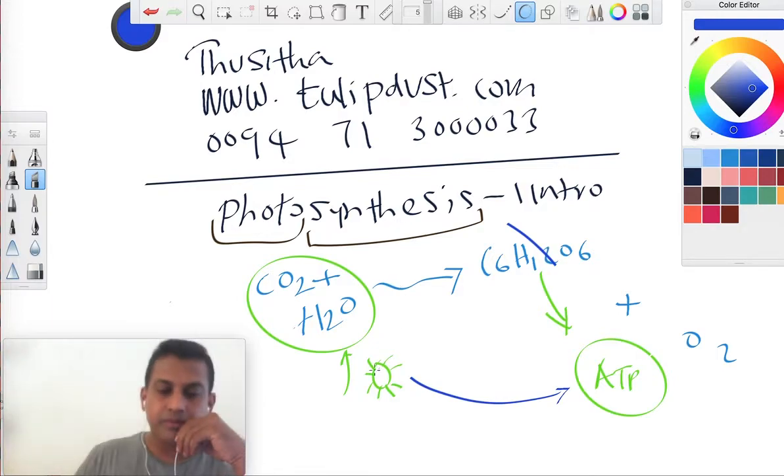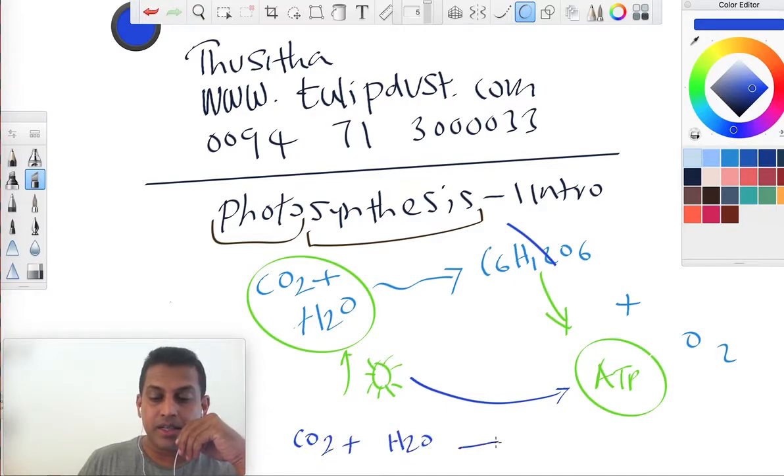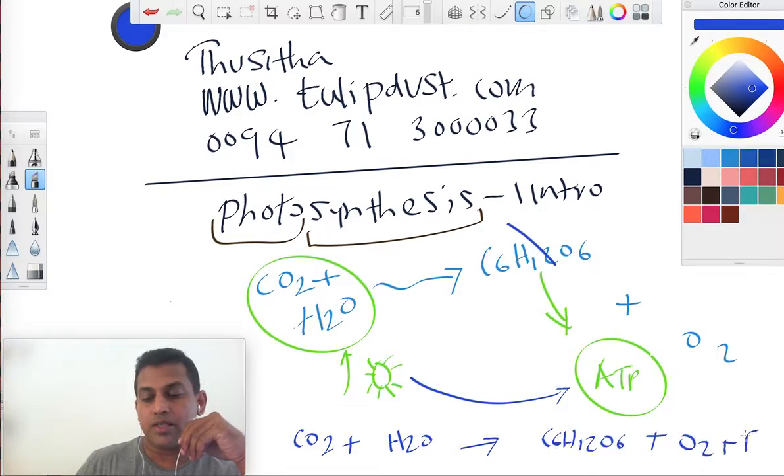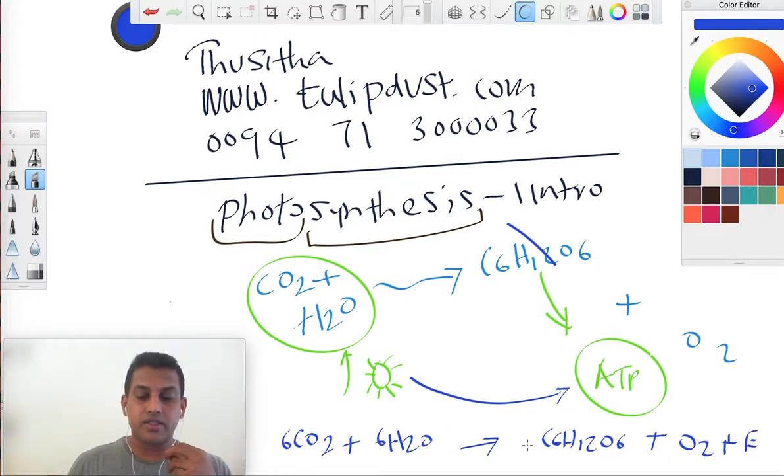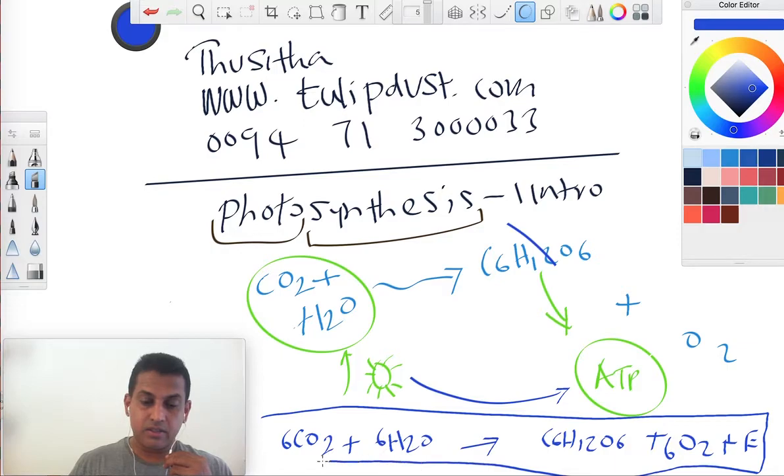The photosynthesis pathway, we can write the chemical reaction like this: carbon dioxide plus water produces glucose plus oxygen plus energy. If you want to balance the reaction, it's 6CO2 plus 6H2O produces C6H12O6 plus 6O2. That's the reaction of photosynthesis.